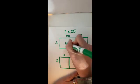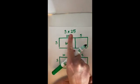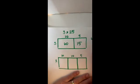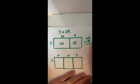So I'm going to start by multiplying 3 times 20 is 60, and 3 times 5 is 15. Put them all together, I get 75.